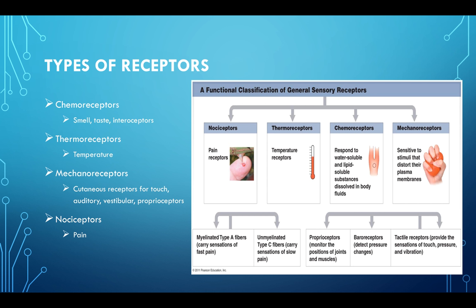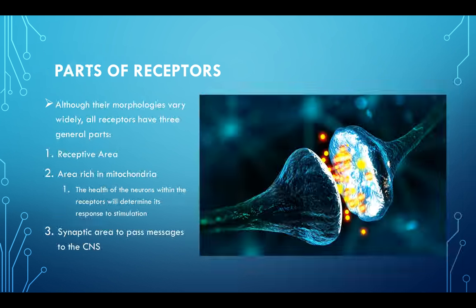Thermoreceptors are for temperature. Mechanoreceptors include cutaneous receptors for touch, auditory, and specific proprioceptors — that's the one we work with most. Then nociceptors for pain. We'll focus on proprioception and vestibular, because those are the big ones for chiropractic.